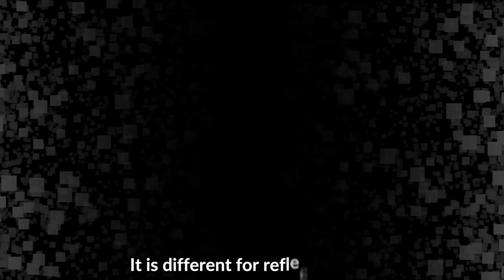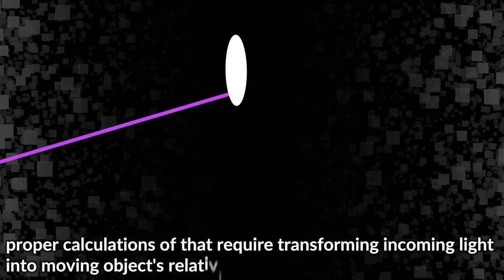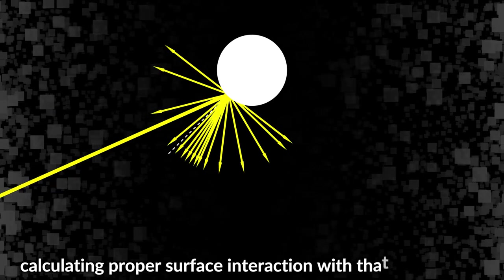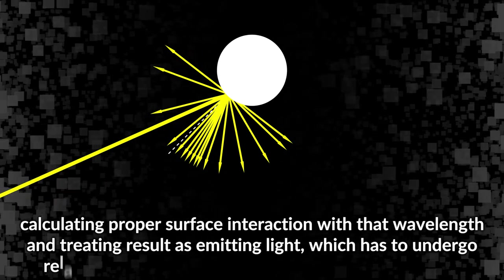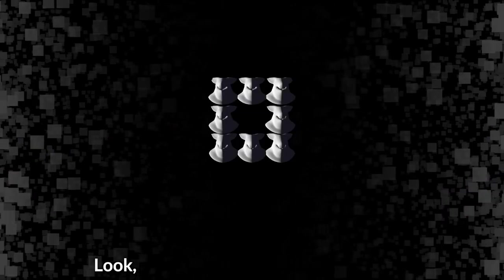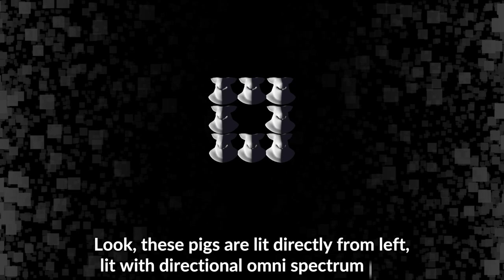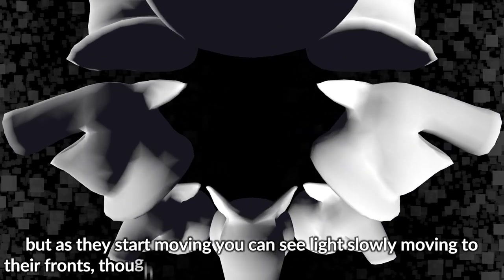This affects all emitted light. It is different for reflected light. Proper calculations of that require transforming incoming light into moving object's relativistically Doppler-shifted wavelength, calculating proper surface interaction with that wavelength, and treating result as emitting light which has to undergo relativistic Doppler shift we described one more time. Look, these pigs are lit directly from left, lit with directional omni-spectrum light.